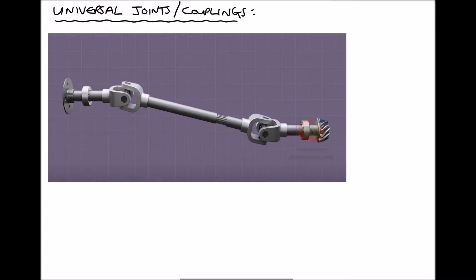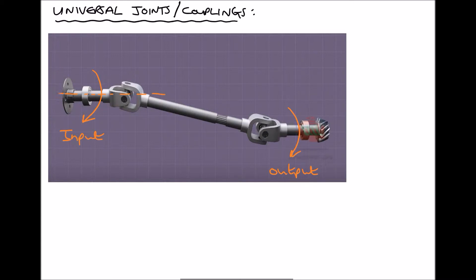The first thing we need to consider is what we mean by constant velocity for our input and output shafts. On the left hand side we have our input shaft, and we're going to assume that our input shaft already has constant velocity. What we want to ensure is that our output shaft also has constant velocity even though the axis of rotation for our input and output shafts are not the same. It should be clear that these two axes are not aligned — they're not sharing the same axis of rotation.